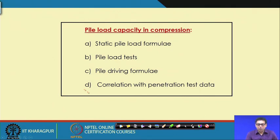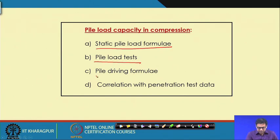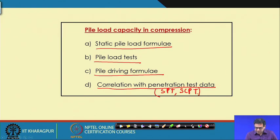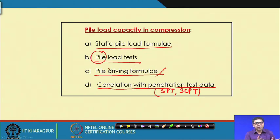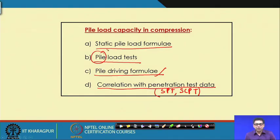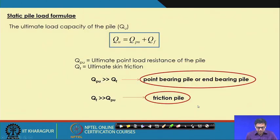There are four ways we can determine the pile load carrying capacity: one is the static pile load formula, then pile load test data, then pile driven formula, or the correlation with penetration data — either SPT or SCPT, which gives friction as well as cone resistance. I will also use the pile load test data. I have discussed about the plate load test during the shallow foundation part, and similar to that, we can conduct the pile load test to get the load carrying capacity.